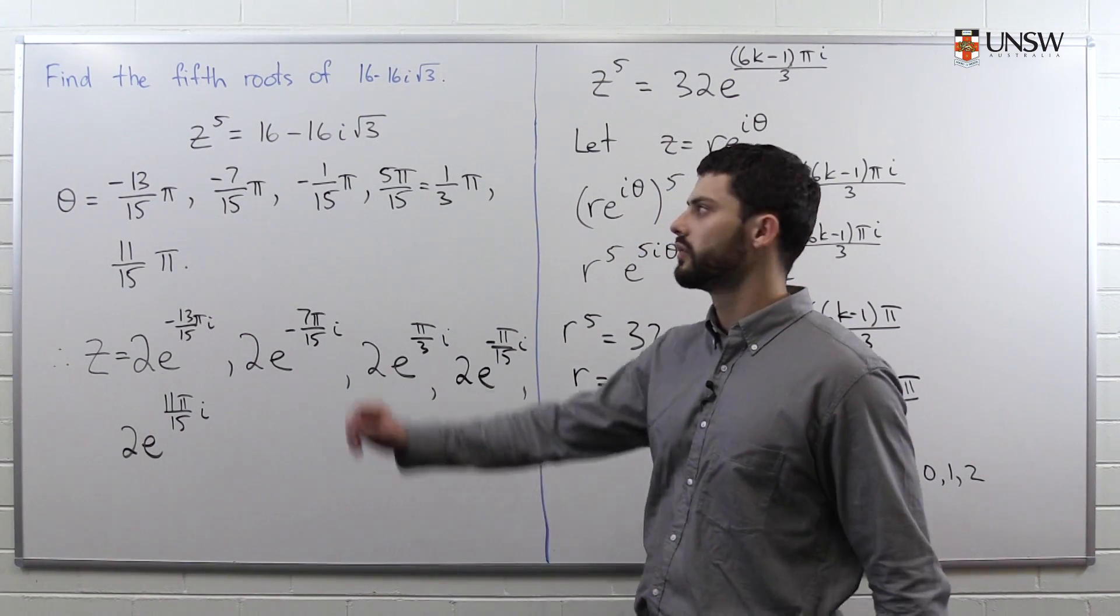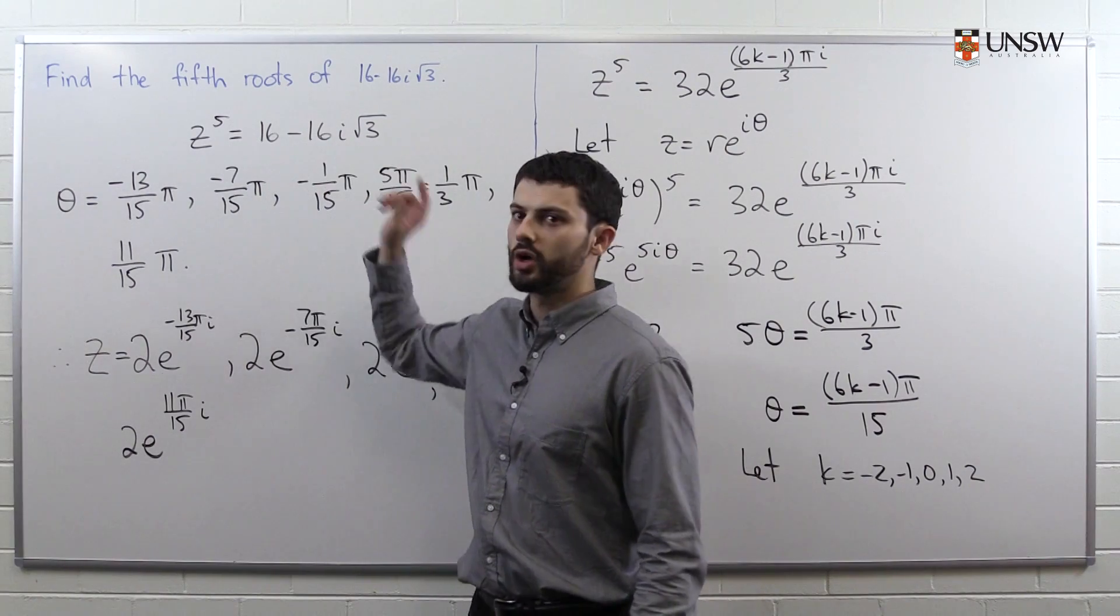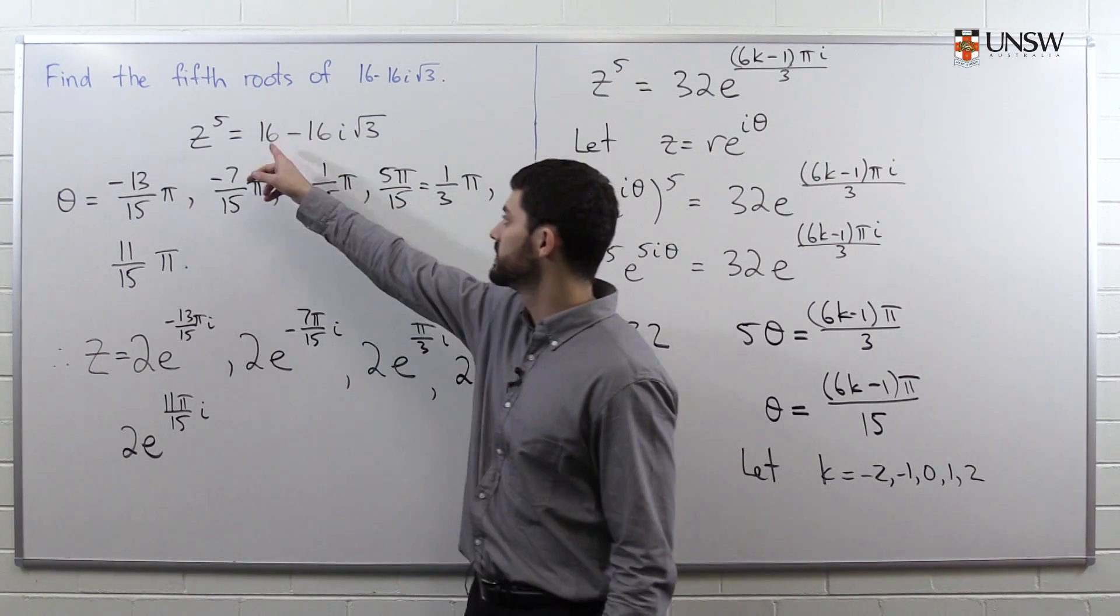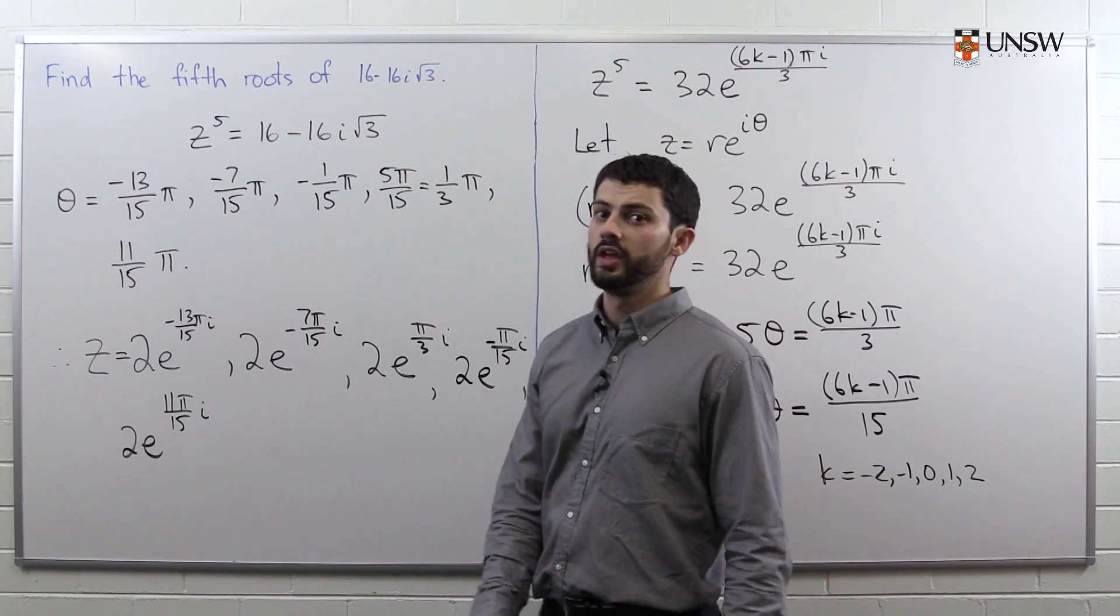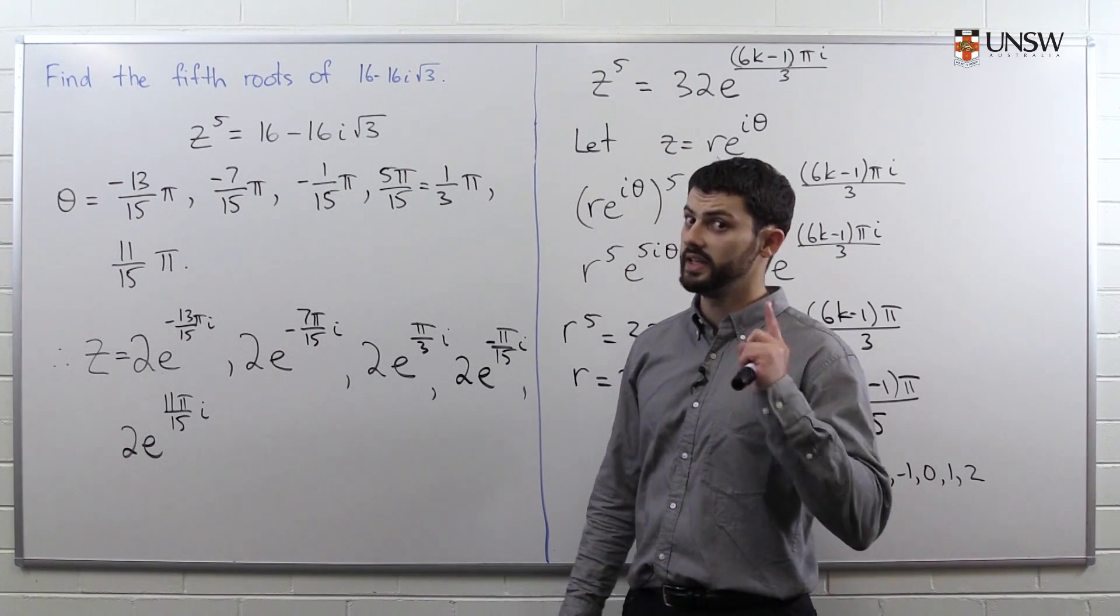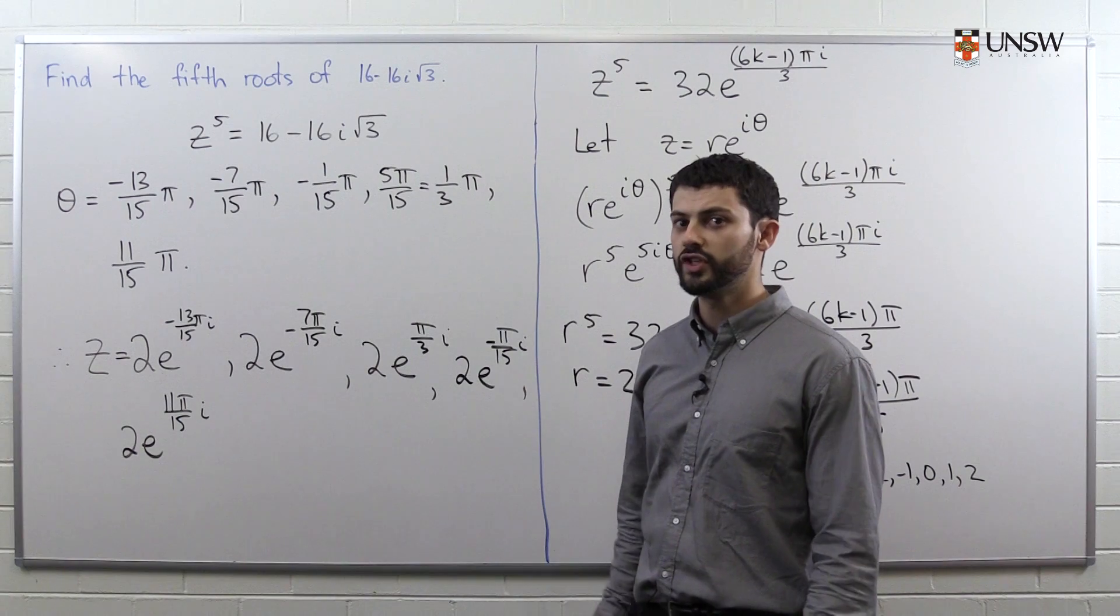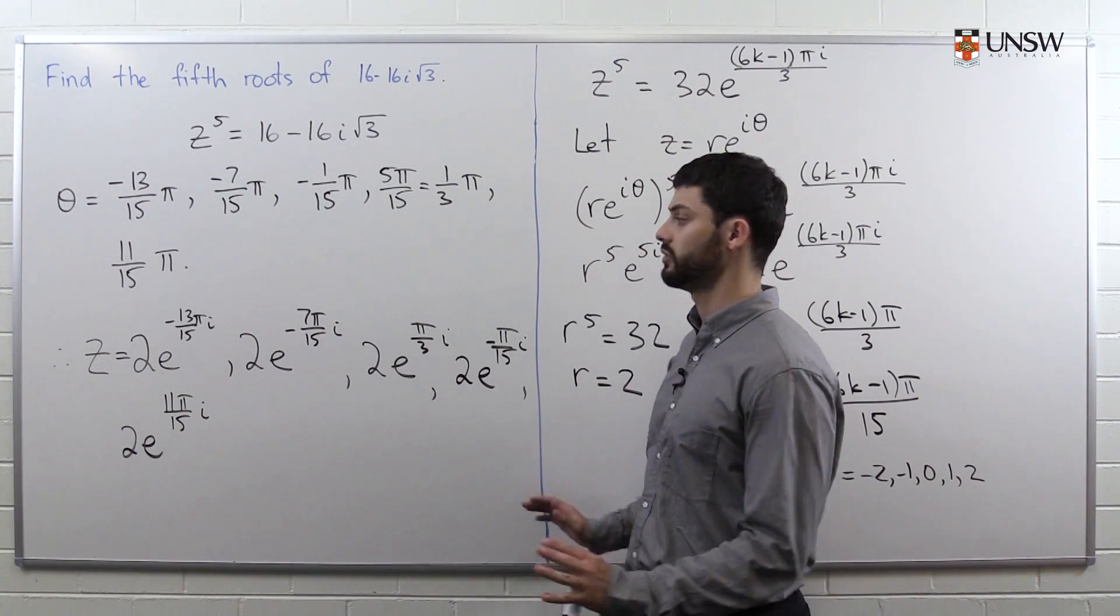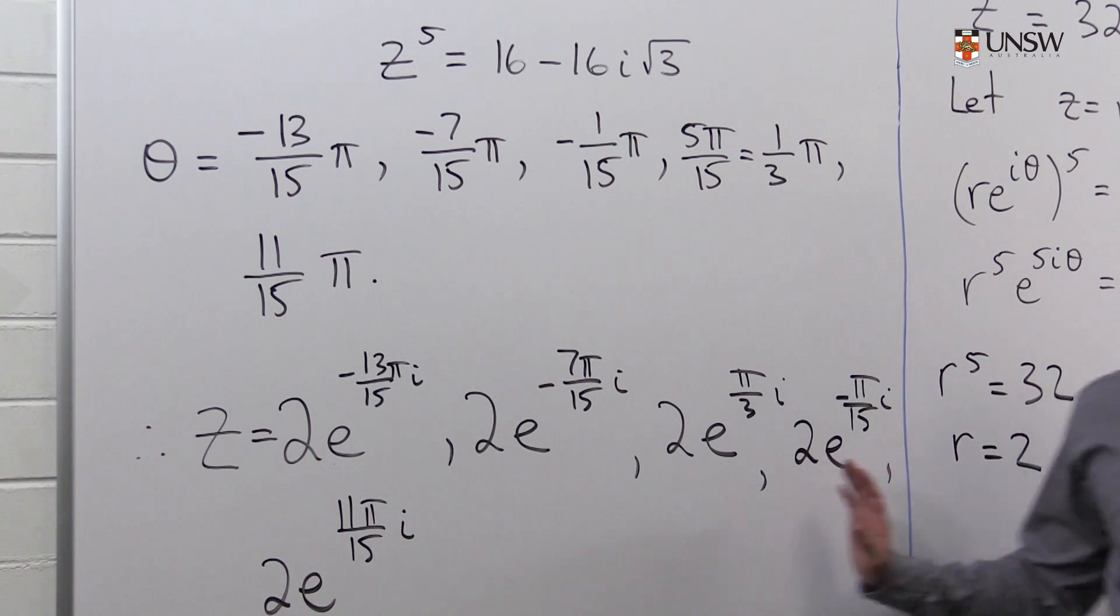Well, the thing that's going wrong is that we're not solving an equation with real coefficients. In particular in this case, 16 - 16i√3 is not a real number. And as I said in that video, if the coefficients are not real, then the theorem is actually false. So this is why the answers we're getting are not complex conjugates of one another.